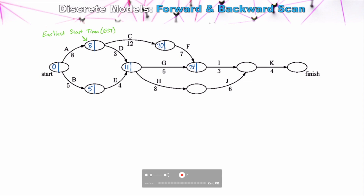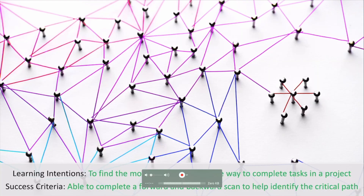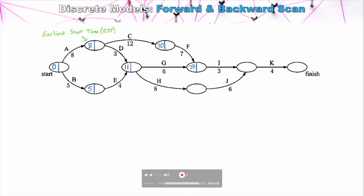So we can't start Task I until 27 units of time. Looking at the node for Tasks J: Task H can be started as early as 11 units, so we can't start Task J until Task H is completed at 19 units of time. Then for Task K, we need both I and J: J can be completed as early as 25, but I can't be completed until 30 units of time. So the earliest we can start K is at 30, and our project will be completed at 34 units of time — the minimum time for the entire project.